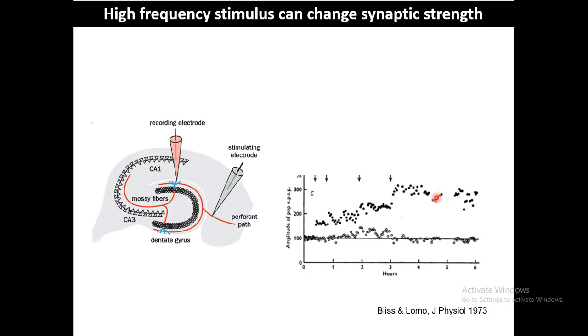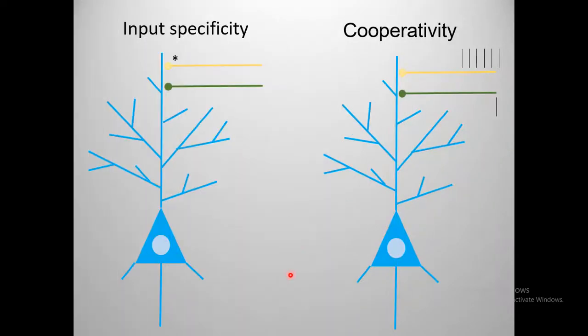Each time they observed that the EPSP slope had increased, suggesting that synaptic efficacy and transmission efficiency had increased, lasting for quite a number of hours. This kind of change they termed long-term potentiation — a long-lasting increase in synaptic strength.